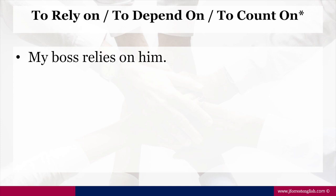Let's take an example sentence: 'My boss relies on him.' We're using the phrasal verb rely on — you rely on someone. Notice the spelling: we have an -ies ending. Think about what verb tense this is — it's the present simple. It's -ies because 'my boss' is a he or she subject: 'She relies on him.' When we have a -y ending, it changes to -ies.